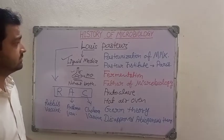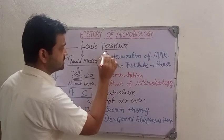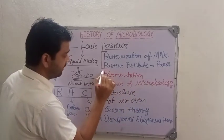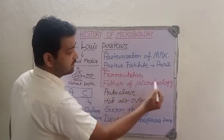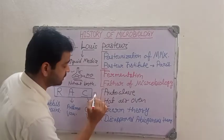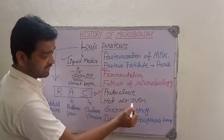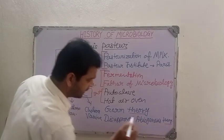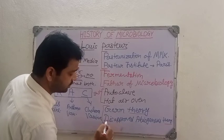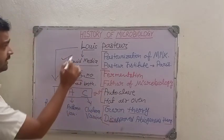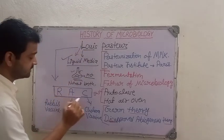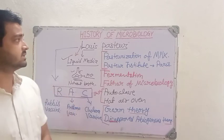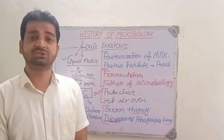To summarize, we can remember all contributions of Sir Louis Pasteur as follows: from 2P — Pasteurization of milk and Pasteur Institute in Paris; from F — Fermentation, and he is also known as Father of Microbiology; 2 sterilization equipment — Autoclave and Hot Air Oven; 2 theories — Germ theory was given and Abiogenesis theory was disapproved; L for Liquid media; and 3 vaccines — Rabies, Anthrax, and Cholera.